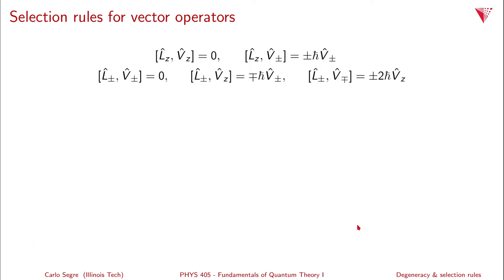Collecting all these results, the key commutator relations are: [Lz, Vz] = 0; [Lz, V±] = ±H-bar V±; [L±, V±] = 0; [L±, Vz] = ∓H-bar V±; and [L±, V∓] = ±2 H-bar Vz.